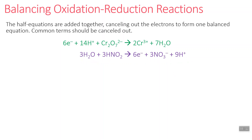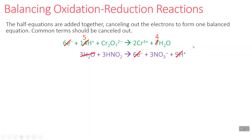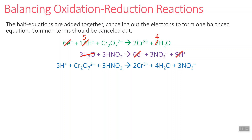Now we combine the two half reactions into one balanced equation and cancel common terms. We cancel the six electrons, which appear on opposite sides. We also cancel water: three H2O cancel from the seven, leaving four H2O. For H+, nine H+ cancel from the 14, leaving five H+. Combining everything gives us the overall balanced equation, and at this point we're done if the reaction is in acidic conditions.